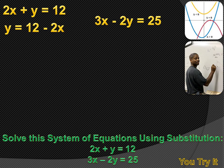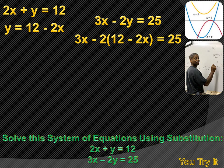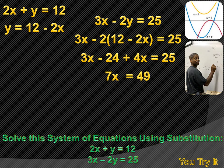Now I take the other equation, 3X minus 2Y equals 25, and substitute 12 minus 2X for Y. It reads 3X minus 2 times (12 minus 2X) equals 25. I distribute the minus 2: minus 2 times 12 gives minus 24, and minus 2 times minus 2 gives positive 4X. So that reads 3X minus 24 plus 4X equals 25. Combining like terms gives 7X equals 49.